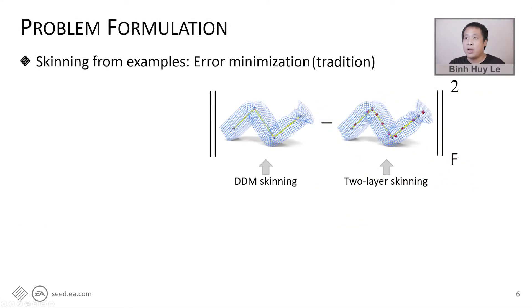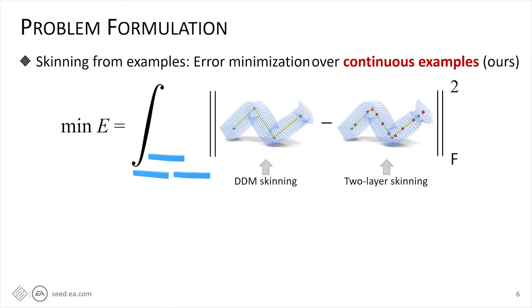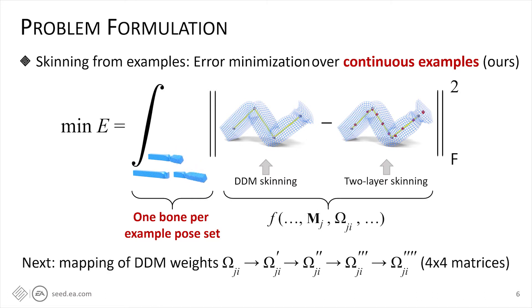Instead, we formulate our problem as the skinning-from-example framework, where we minimize the sum of square compression error between the deformation of the original DDM and the deformation of the two-layer model over the set of example poses. But instead of using discrete example poses like the traditional framework, we use example poses generated by bone transformations in continuous range of motions. Here, we need special-designed example poses that only transform one bone at a time. Our error here is the function of bone transformation m and DDM weights omega.